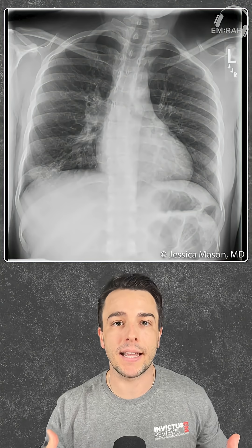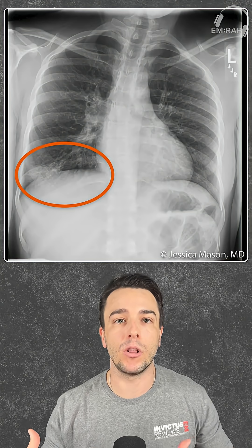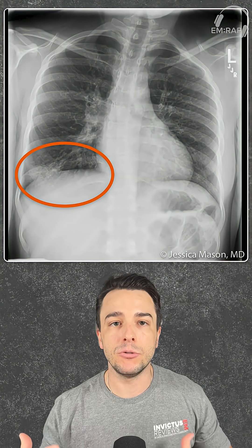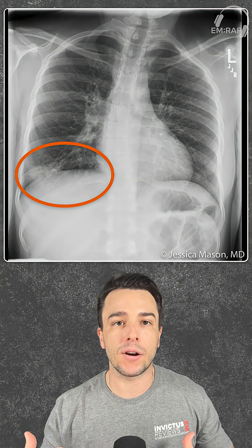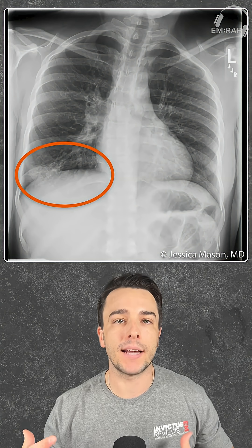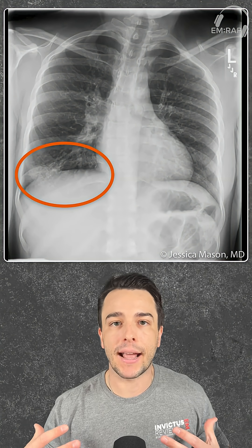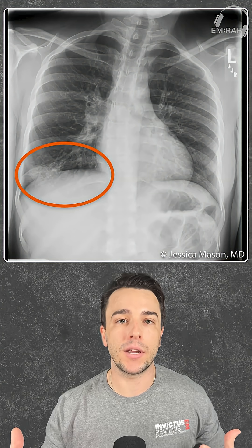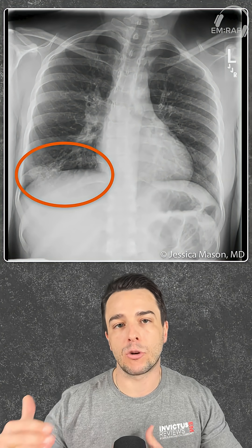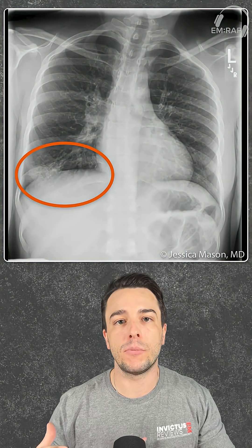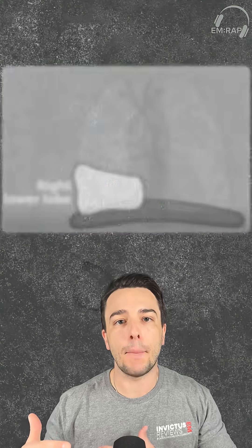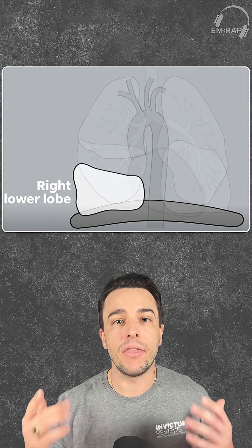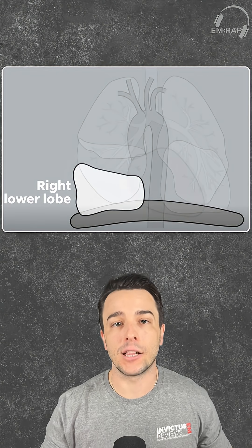In this example, we see a right lower lobe pneumonia. It's kind of subtle here, but you do see that blurring of that right diaphragm. We think of that blurring as pus from that pneumonia in that right lower lobe, because the right lower lobe of the lung abuts that right diaphragm border. And that is silhouette sign.